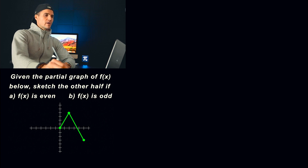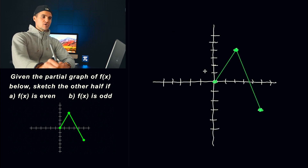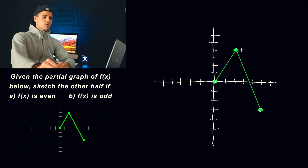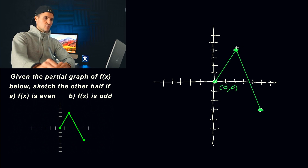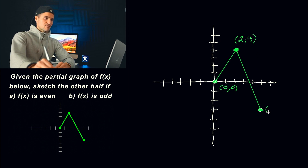Starting with part A, we know that if a function is going to be even, it's going to be symmetrical about the y-axis. The first thing you want to do is get the coordinates of the corner points, because these are the points we're going to be transforming. This point at the origin is (0, 0), then we have (2, 4), and then this point at (5, negative 3) — we're going to be transforming those.